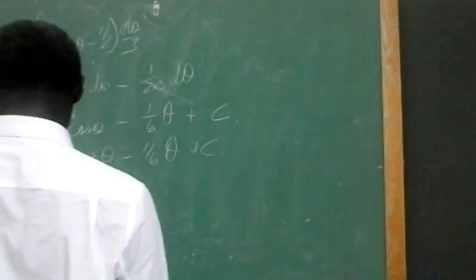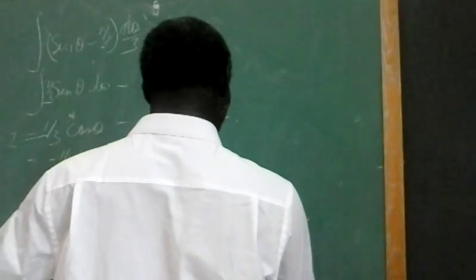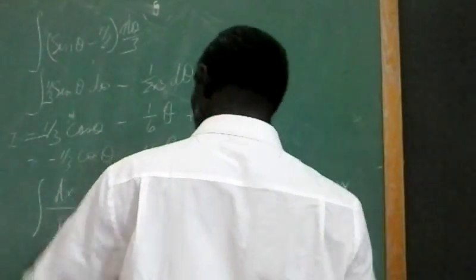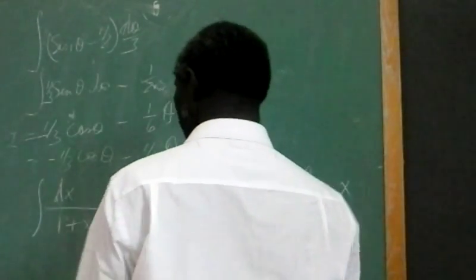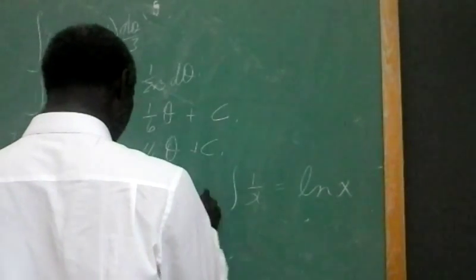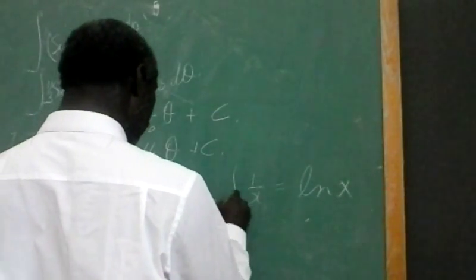And that's now equal to. You see, this takes the form of the integral of one over u which we know to be equal to the logarithm of u. Right? This is equal to the logarithm of one plus x.